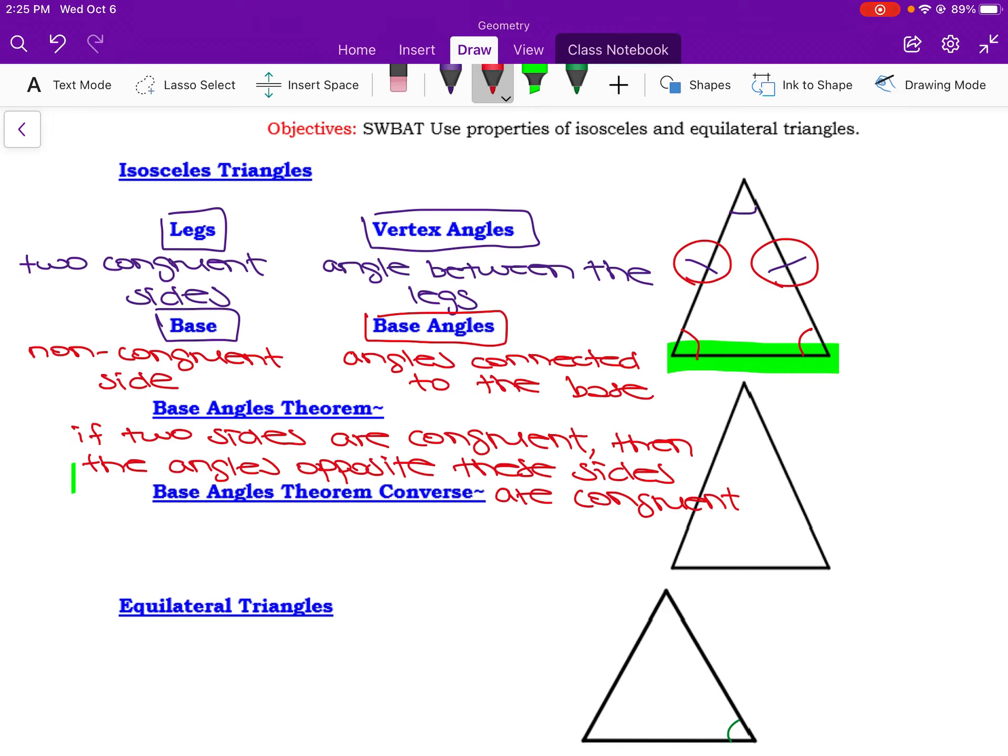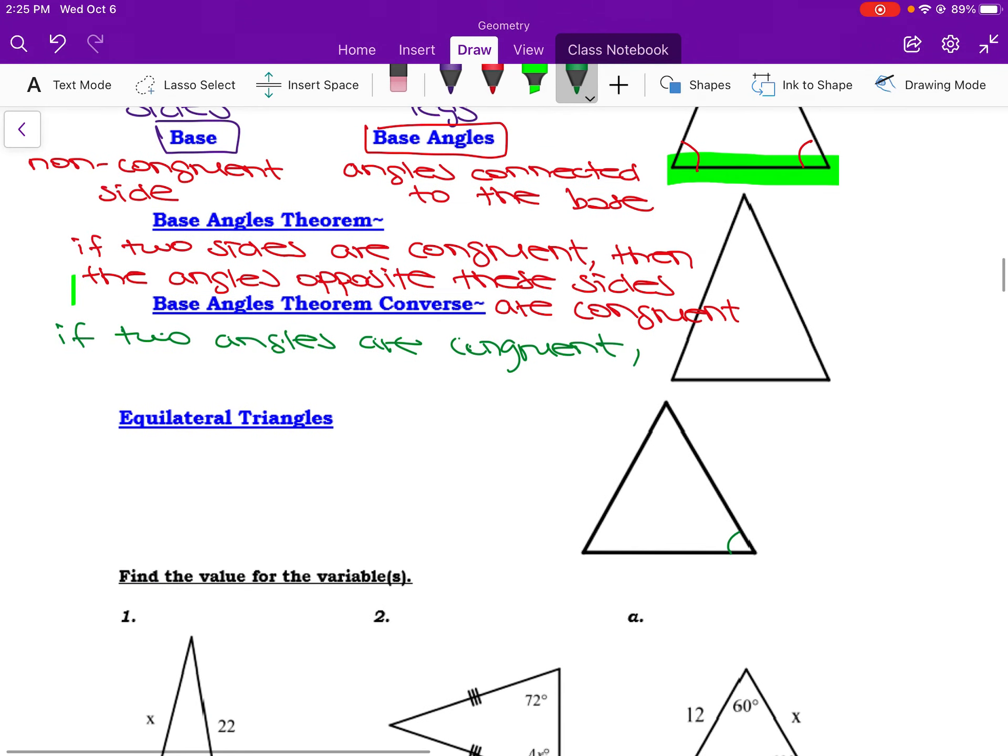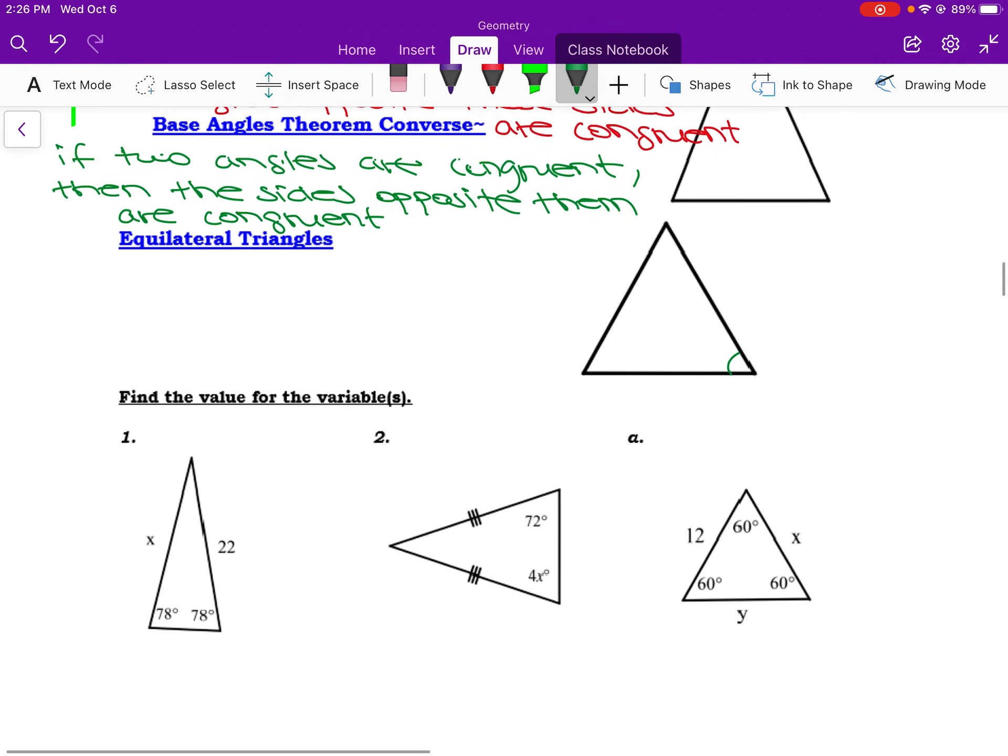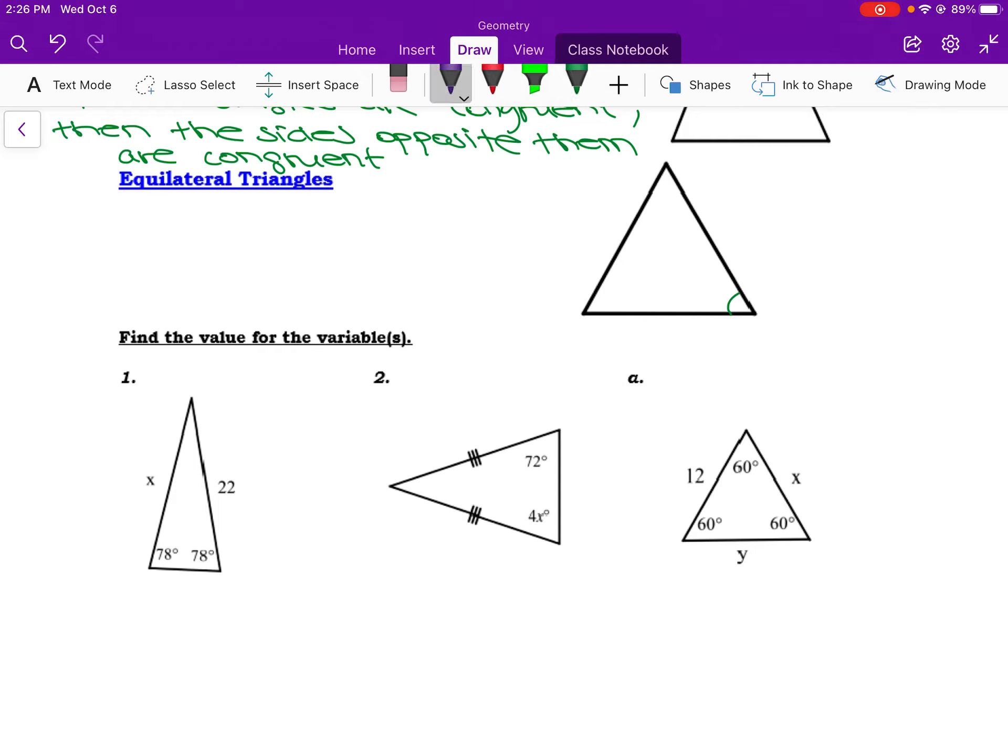So if I know that the measures themselves of the sides are the same, then those angles across from them have to also be the same. The converse is just going to be essentially the reverse logic. So it's saying if two angles are congruent, then the sides opposite them are congruent. So both theorems relate the measures of the sides to the angles, but it's just kind of which piece of information is given to us, and which piece are we concluding from the given.